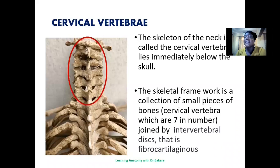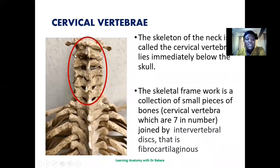The skeletal system of the neck is called the cervical vertebra. They can actually be dismantled and separated into smaller pieces. They are small pieces of bone located one on top of each other. There are seven in number. The bones are joined together by the intervertebral disc, which is made up of fibrous tissue and also cartilage.